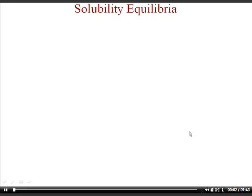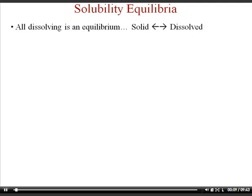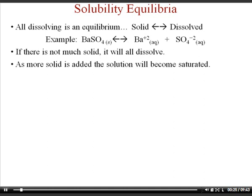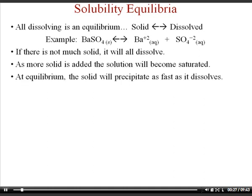The next part of the notes in Chapter 17, Additional Aspects of Aqueous Equilibria for AP Chemistry, deals with solubility equilibria — the solubility of something dissolving in water. All dissolving exists as an equilibrium between the solid and the aqueous phase. For example, barium sulfate turns into barium ions and sulfate ions. If there's not much solid, it all dissolves, but as more solid is added, the solution becomes saturated and the solid precipitates as fast as it dissolves.